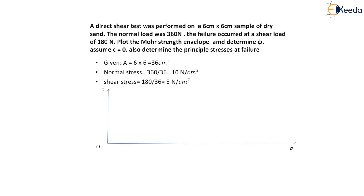We will plot this failure point on a graph where the x-axis represents normal stress and the y-axis represents shear stress. The failure point has x-coordinate 10 N per cm square and y-coordinate 5 N per cm square. This point of intersection is labeled D, and it represents failure of the soil sample. Point D lies on the Mohr strength envelope.